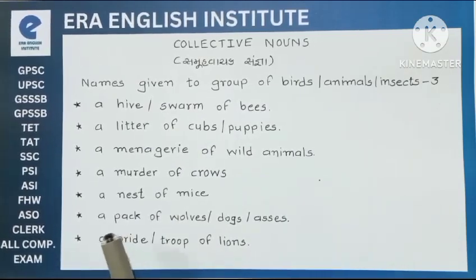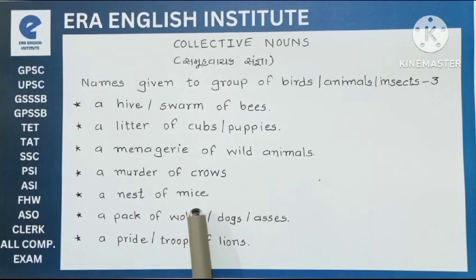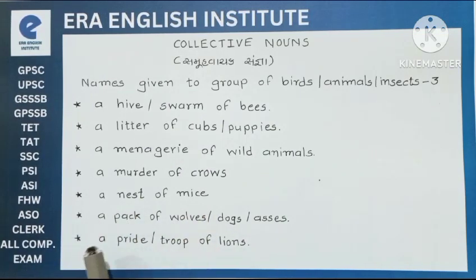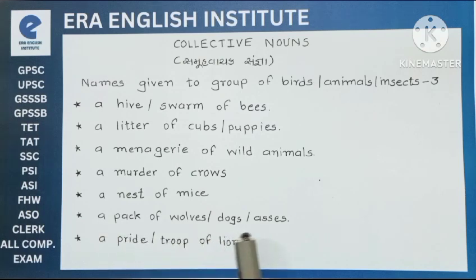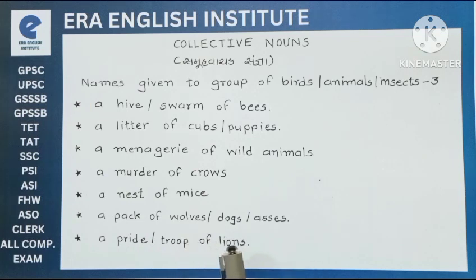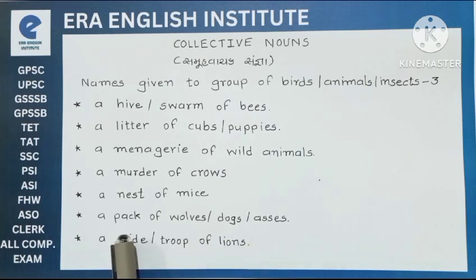Now next one: a nest of mice. उंदरों के लिए collective noun nest होता है. Next one: a pack of wolves, dogs, asses. वरू, कुत्ता, और गधे के टोले के लिए as a collective noun, pack शब्द का उपयोग होता है.